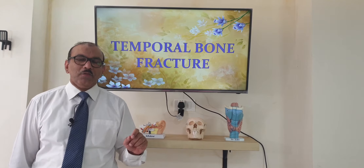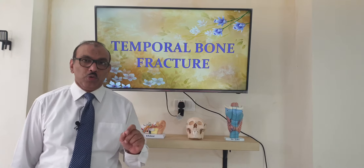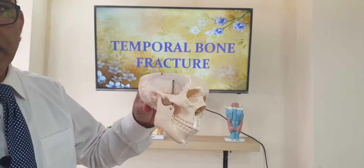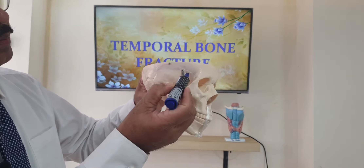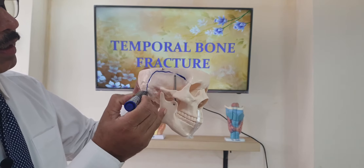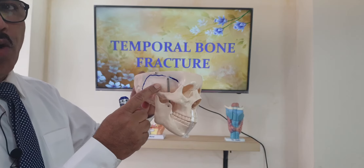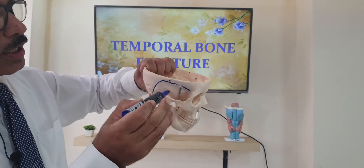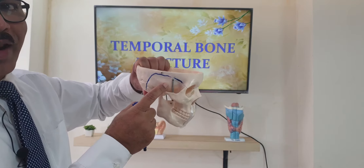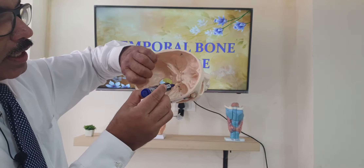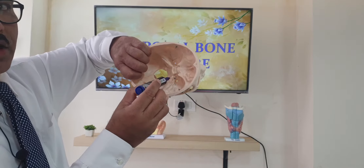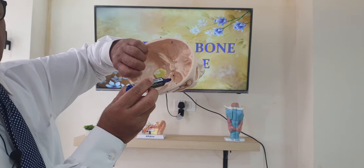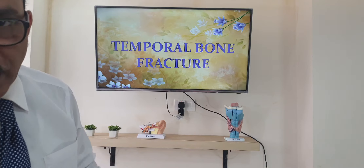Let me tell you about the temporal bone. If you see this model, this is the temporal bone, this part. The temporal bone has got four parts, which includes the petrous part. In case of temporal bone fracture, we will be talking about the fracture in connection with the petrous part — whether the fracture is going parallel to it or perpendicular to it. When you see the picture, we will understand better.